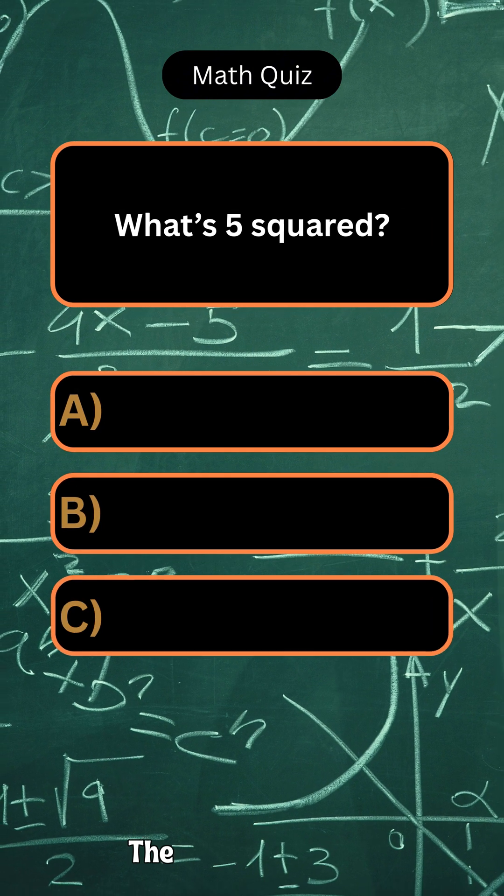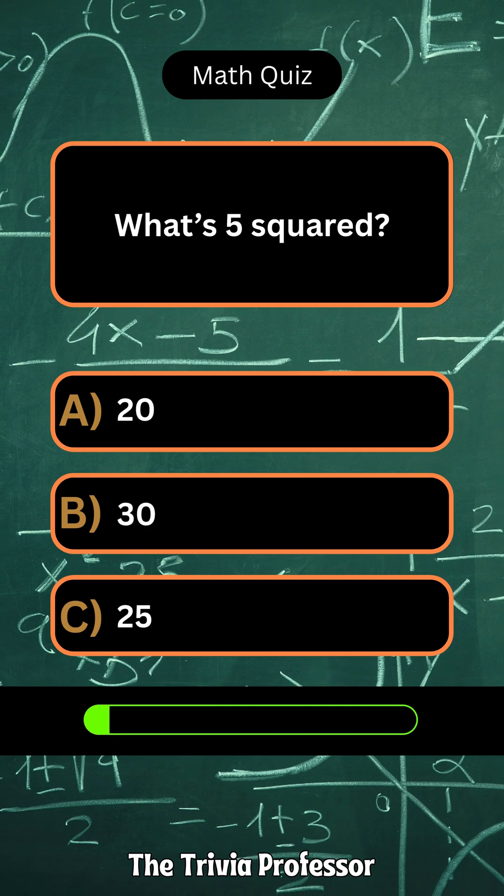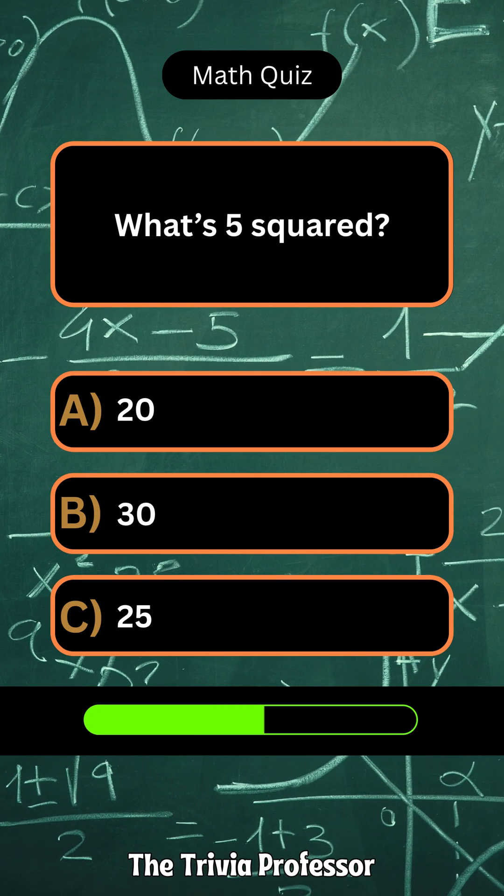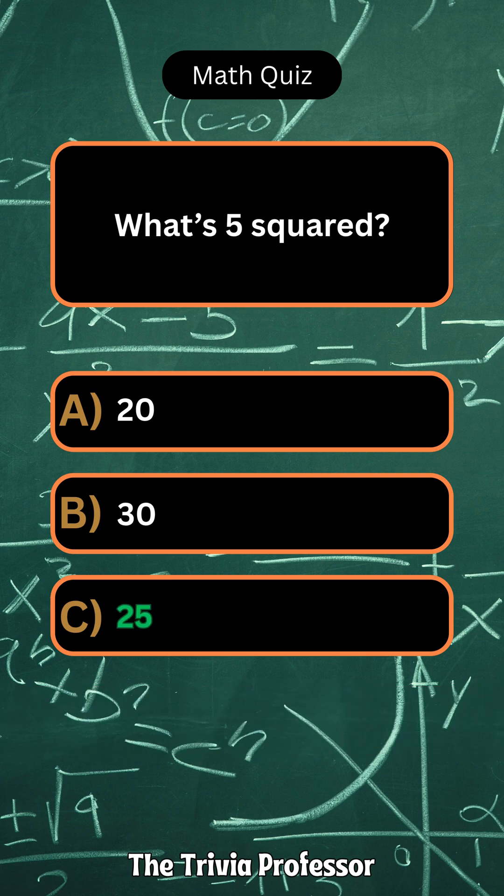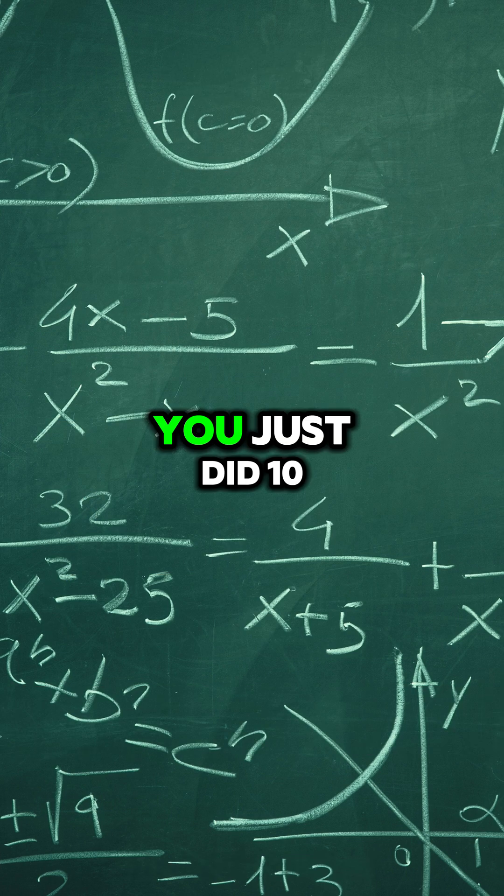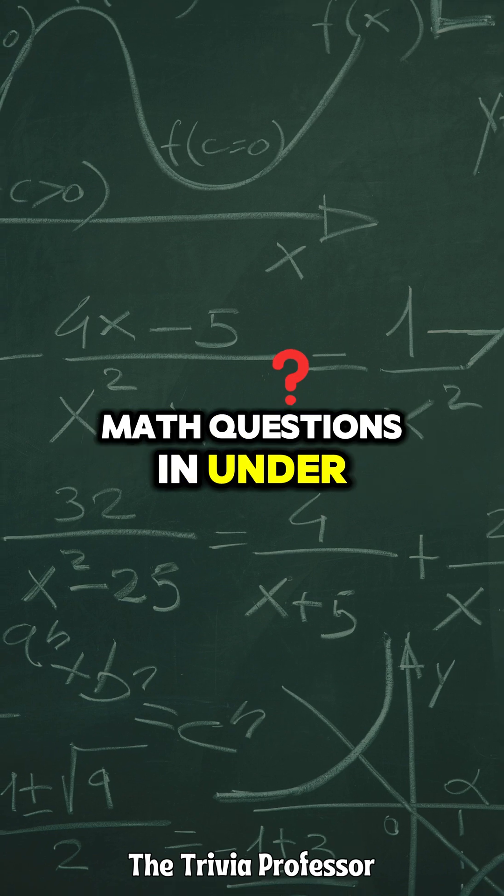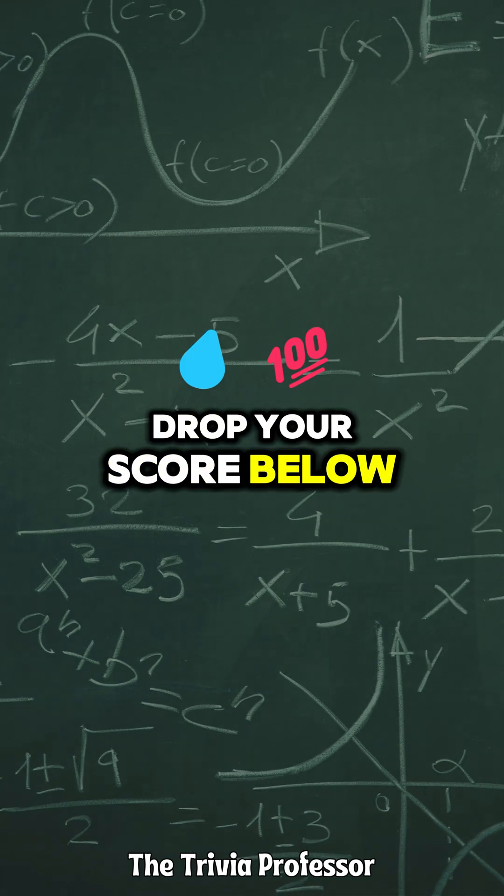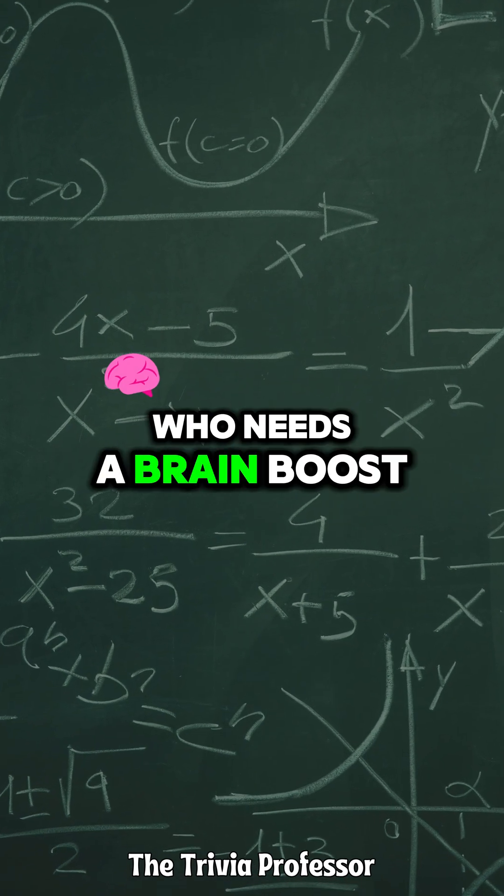What's 5 squared? 25. You just did 10 math questions in under a minute. Drop your score below and tag a friend who needs a brain boost.